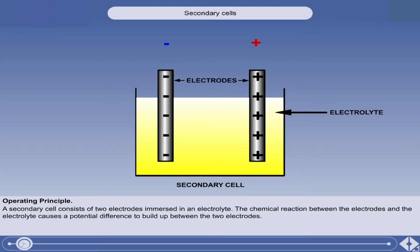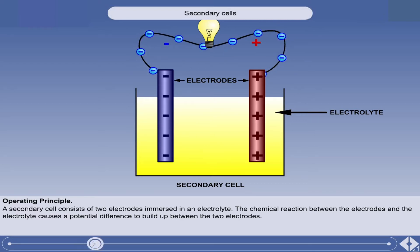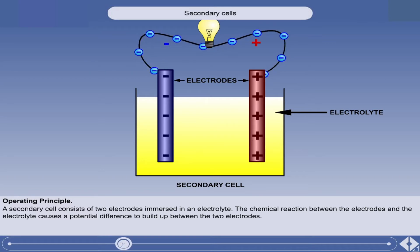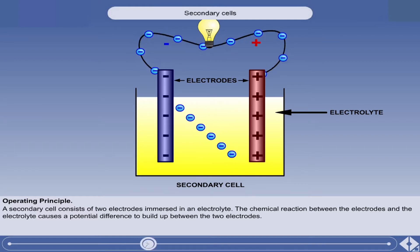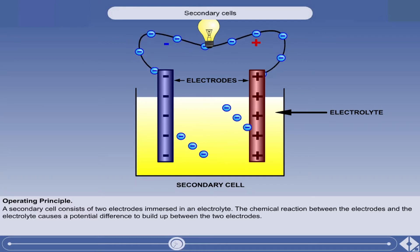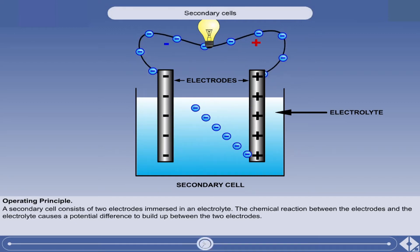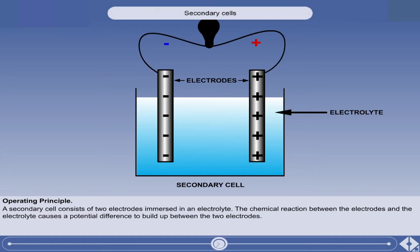Secondary cells work on the same principle as primary cells. They have two electrodes immersed in an electrolyte. The chemical reaction between the electrodes and the electrolyte causes a potential difference to build up between the two electrodes. When the positive and negative terminals of the electrodes are connected to an external circuit, electrons flow from the negative terminal to the positive terminal through the circuit. At the same time, more electrons are allowed to transfer inside the cell from the positive to the negative electrode. As this circulation of electrons continues, the chemical makeup of the electrodes and the electrolyte changes. When all of the chemical energy is used up, the potential difference will fall to zero.